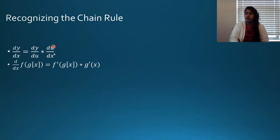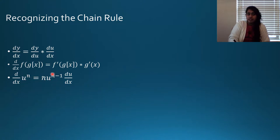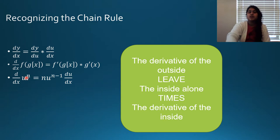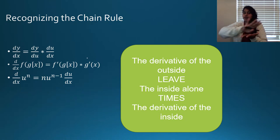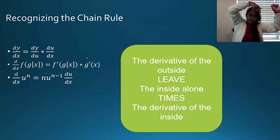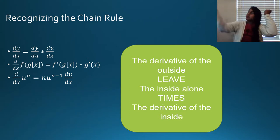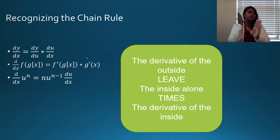That's a little easier to see. If I'm looking at the power rule — U to the N — that's N times U to the N minus 1, times the derivative of U, because there are two different variables. Here's my phrase: the derivative of the outside, leave the inside alone, times the derivative of the inside. Nine times out of ten, the mistake is forgetting to leave the inside alone.